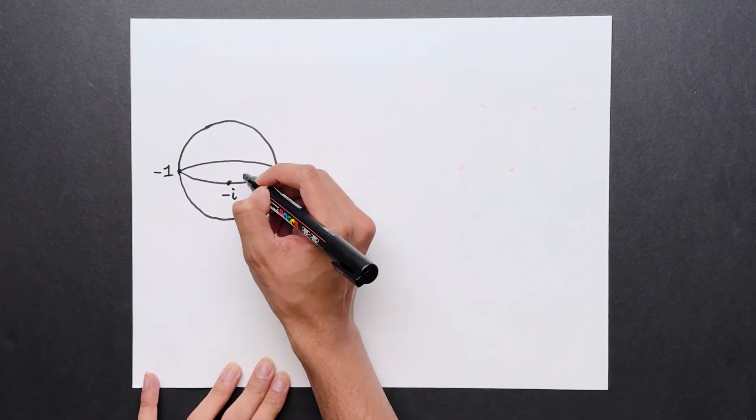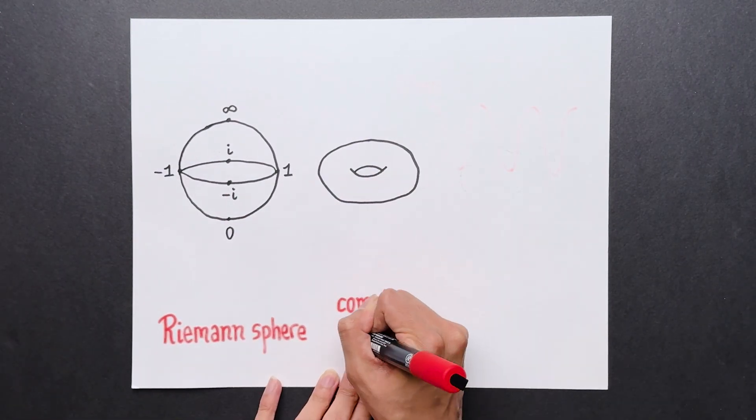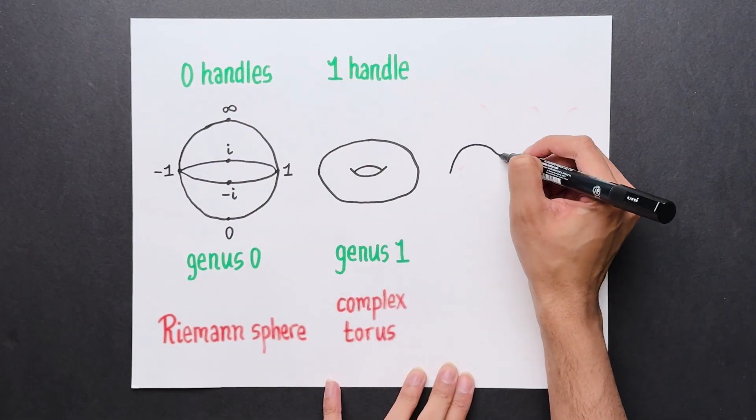These are examples of things called Riemann surfaces. These are surfaces that locally, at each point, look like the complex plane. But these surfaces aren't just any ordinary objects.